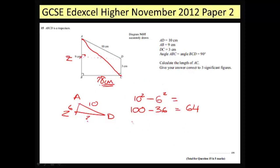Once I've got the 8cm length what I can then do is look at the larger triangle ABC and I can do 9 squared plus 8 squared which is 145. Then I'm going to do the square root of 145 which is 12.0415 and a few bits after that.